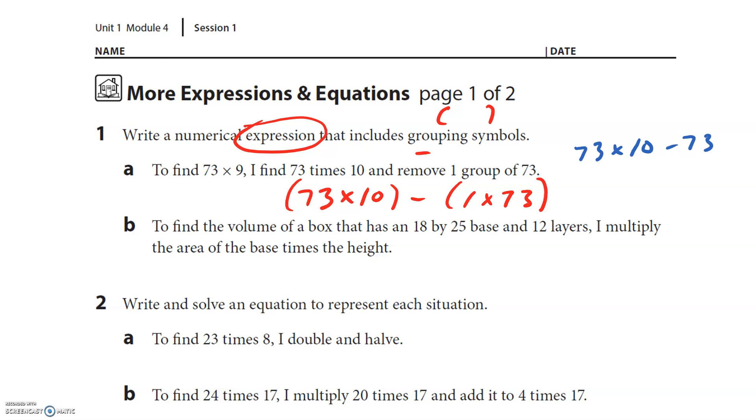To find the volume of a box that has an 18 by 25 base and 12 layers, I multiply the area of the base times the height. So let's put the base all together. Here's the base, and by in this instance means multiply. So (18 × 25) and then we're going to multiply that by 12. And since all multiplication, it doesn't matter if the parentheses are there. I could also write 18 × 25 × 12. And it could go in any order, though they said they did the base and then the layers.